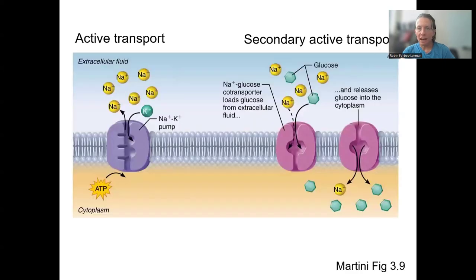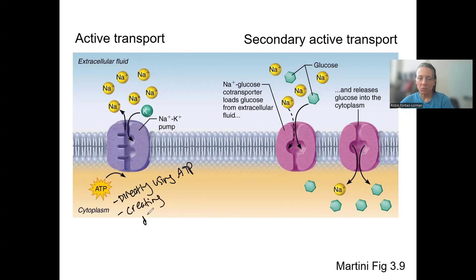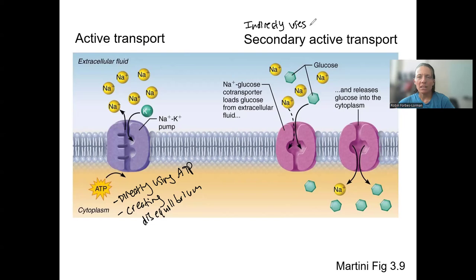The left side here is active transport. We have the sodium-potassium pump that is directly using ATP and creating disequilibrium. The sodium-potassium pump is not the only ATP pump, but it's the one we'll see most often. Secondary active transport indirectly uses ATP — instead, it's using a concentration gradient to move a molecule, a concentration gradient that was set up by active transport and must be maintained.